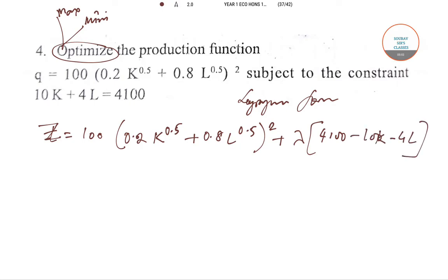Taking del z/del K: the first derivative is 100 times 2 times (0.2K^0.5 + 0.8L^0.5) times 0.2 times 0.5 times K^(-0.5).